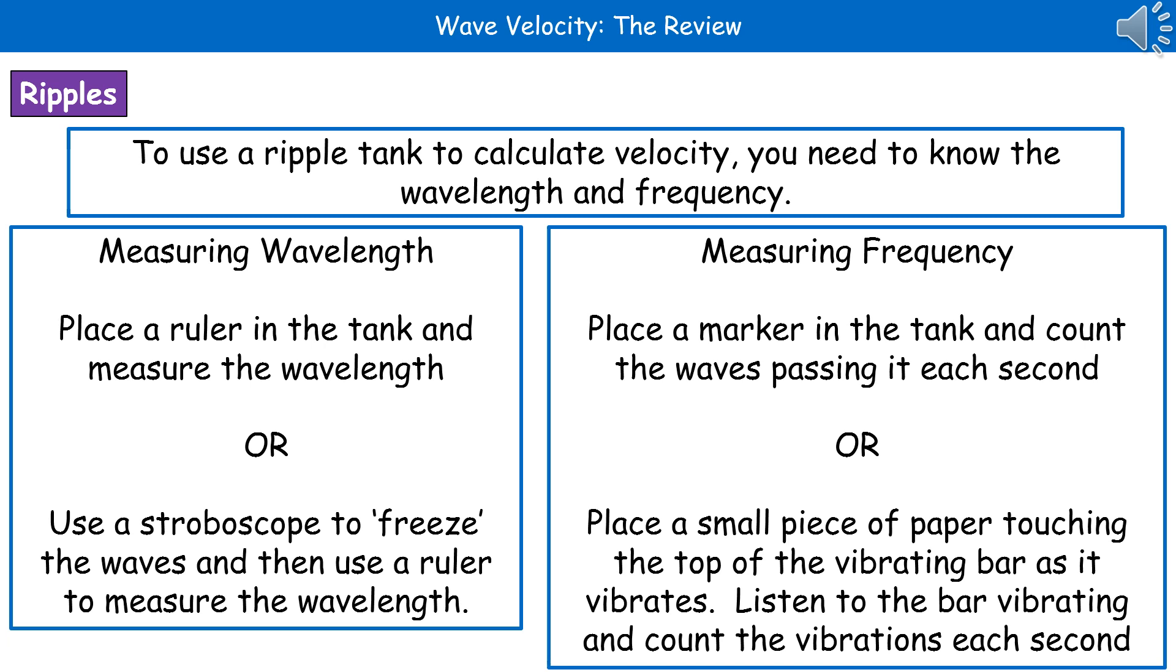Alternatively, we could use something called a stroboscope, which is basically a strobe light. What that does is it freezes the waves, and then we can have our ruler placed underneath onto the actual desk where it's being projected, and then we can measure the wavelength from those frozen waves, which is far easier and more accurate.